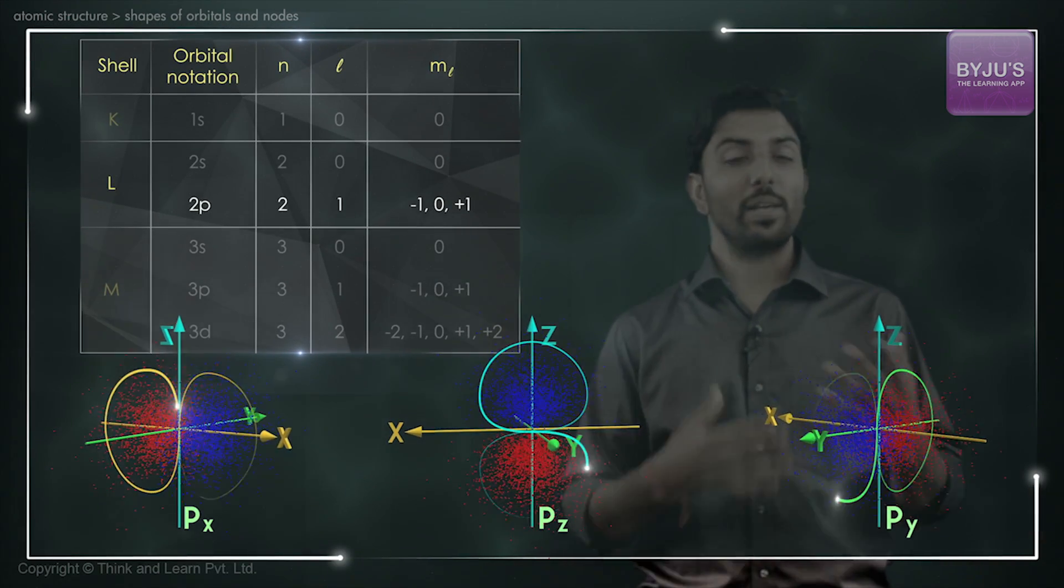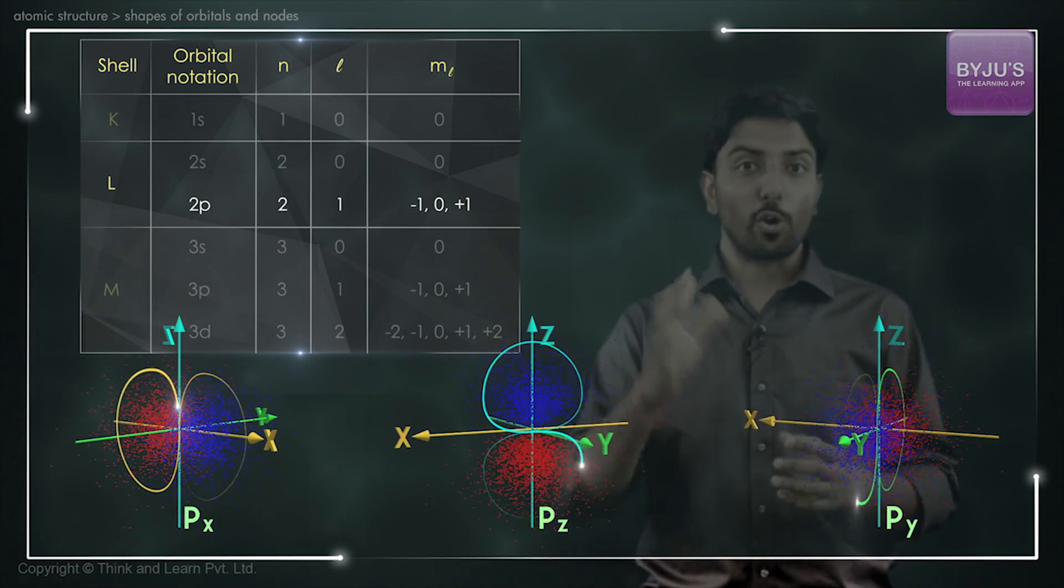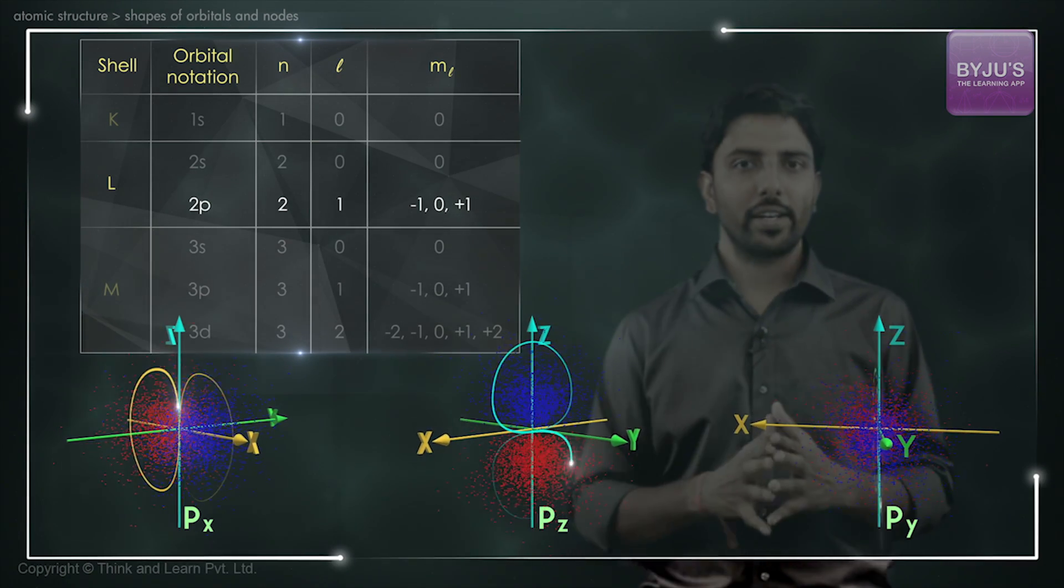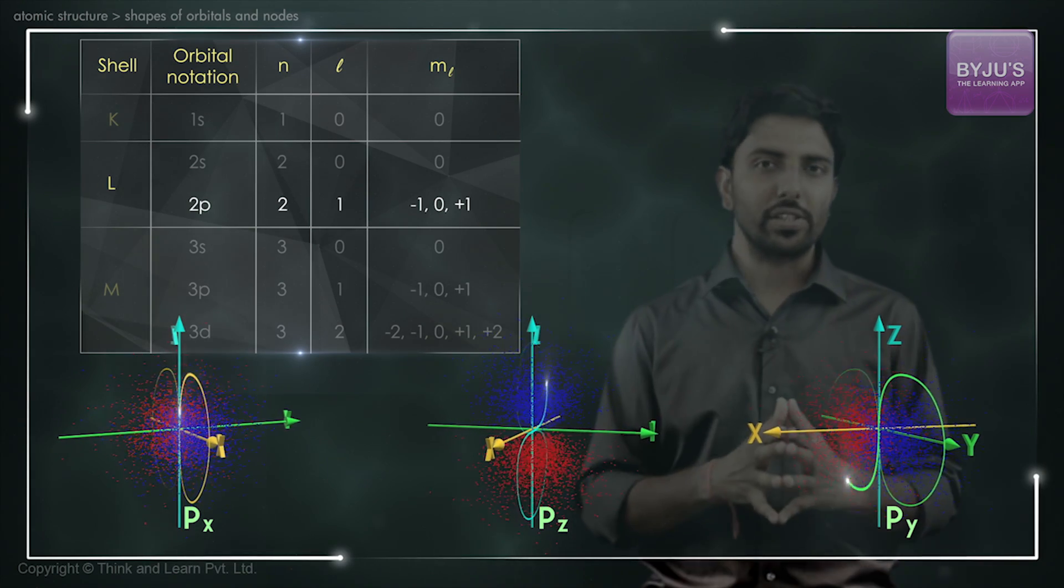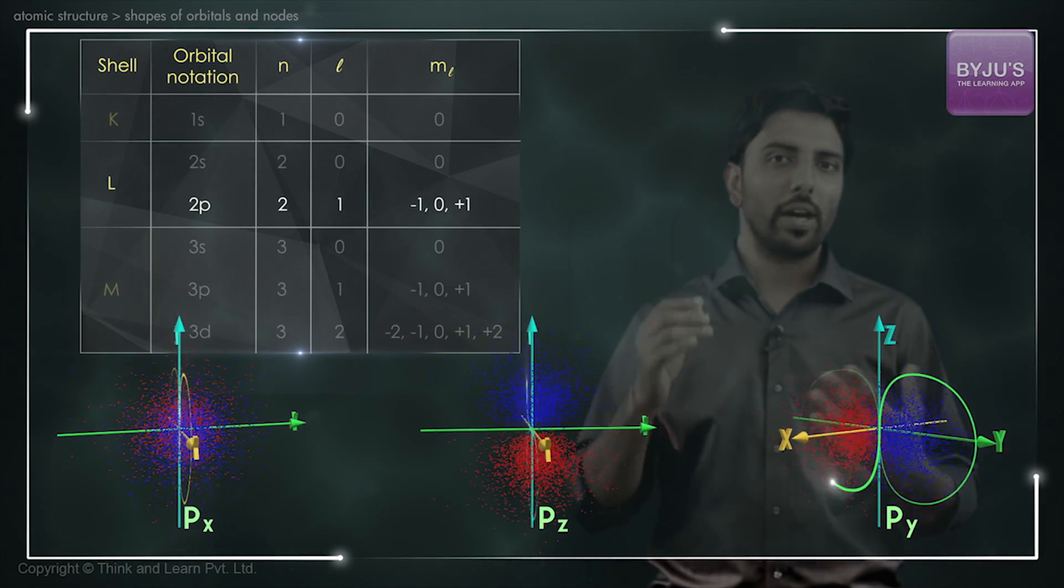Each of these is a separate wave function or atomic orbital. Don't forget, each will have a unique combination of N, L, and M.